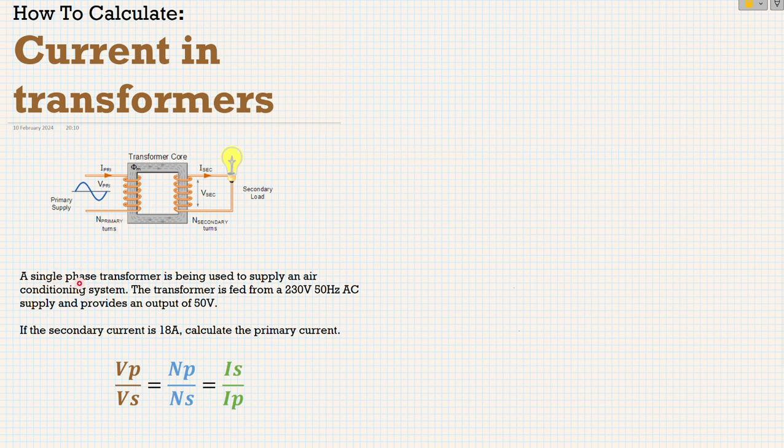Let's read this question. A single-phase transformer is being used to supply an air conditioning system. The transformer is fed from a 230 volts, 50 hertz AC supply and provides an output voltage of 50 volts. So straight away we've got two values there. We've got the voltage primary and the voltage secondary. Brilliant, so we've filled one section.